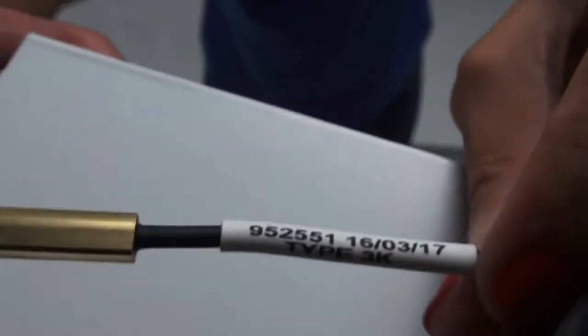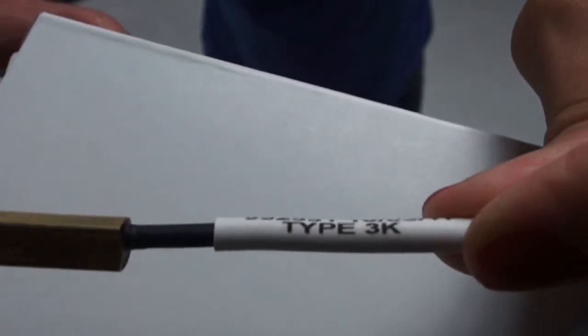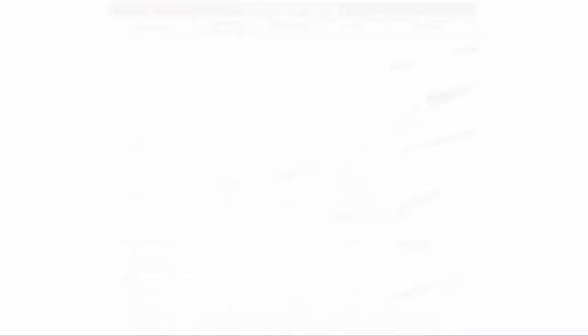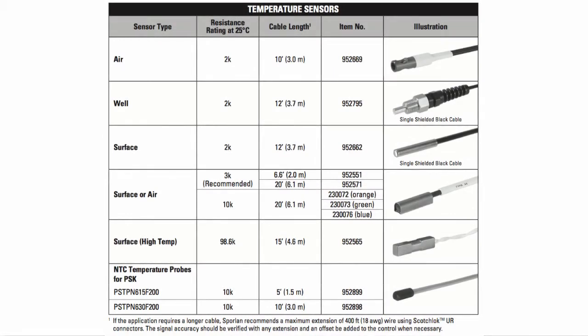Next is a temperature sensor. I'm using the 3K surface sensor. This provides better resolution and it's more robust than the 2K sensors, but you could use either the 2K well sensor item number 952795 or the 2K surface sensor item number 952662. However, the 2K air sensor and the 98.6K surface sensor shown in this table cannot be used with this controller.